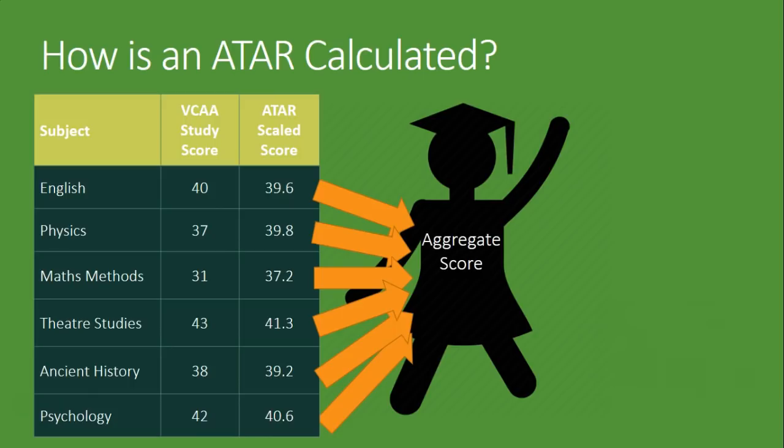Usually most people only do six subjects, so that's just ten percent of the other two. But if you've done a seventh or an eighth, they'll be disregarded entirely. We only take ten percent of the next two. That can also include things like special VET courses or higher education studies that you've done. So we would be taking the full load of physics, English, theater studies, and psychology, and we'd be taking ten percent from ancient history and maths methods.